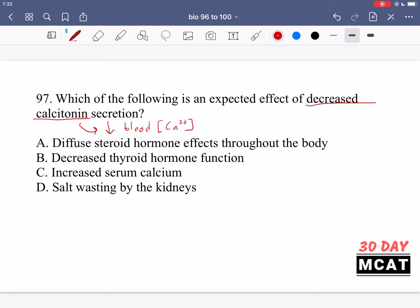Option A is saying diffuse steroid hormone effects throughout the body. No, it's not really related to steroids. B, decreased thyroid hormone function. No, this is incorrect. It's actually released by the thyroid. It's another hormone that's released by the thyroid but the main hormone, the thyroid hormone, is related more to metabolism and it acts antagonistically to parathyroid hormone not the thyroid. So that one is something which might trip you up but it's not correct.